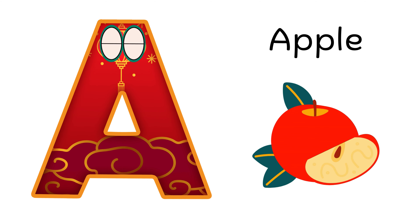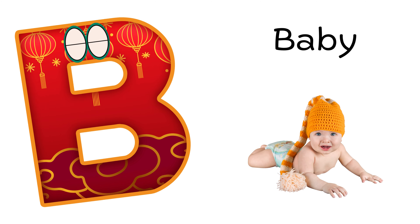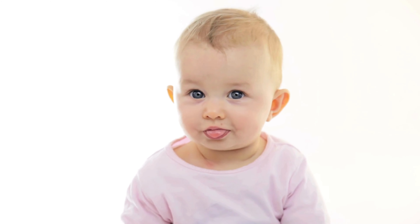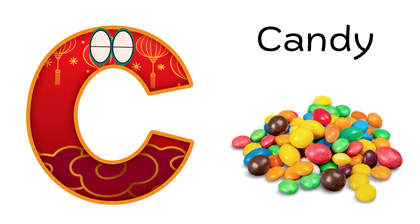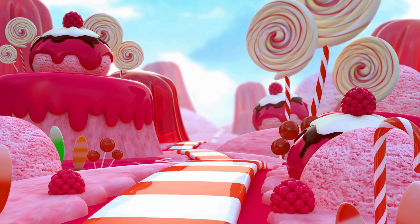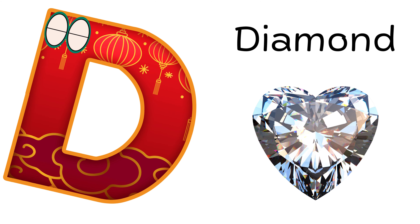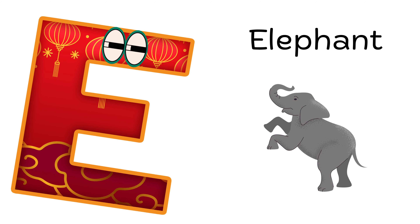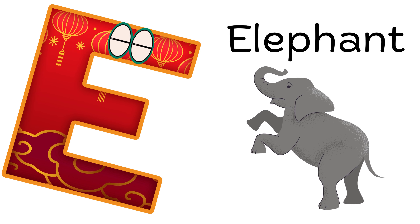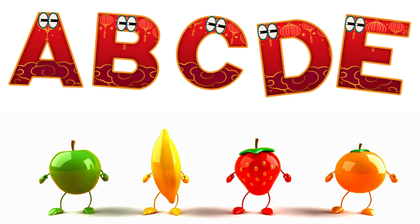A is for Apple. A-A-Apple, A-A-Apple, A-Apple. B is for Baby. B-B-Baby, B-B-Baby, B-Baby. C is for Candy. K-K-Candy, C-Candy, C-Candy. D is for Diamond. D-D-Diamond, D-D-Diamond, D-Diamond.